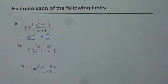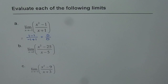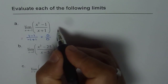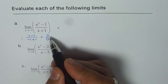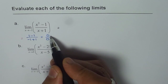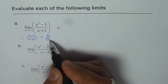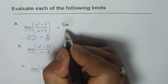By substituting we get 0 over 0, and that is what happens in the other two examples also. This clearly indicates that by substitution we cannot find the limit of the function, and there is a discontinuity at x equals minus 1. However, we can always find the limit of the function as x approaches that point, since limit is not the value of the function at that point but what value the function approaches. So let's factor and get rid of the factor which caused 0 over 0.